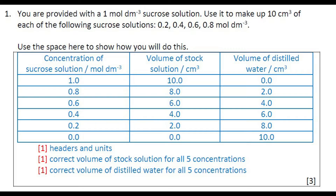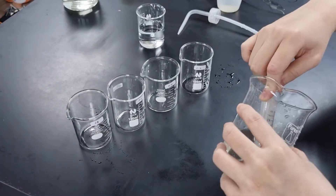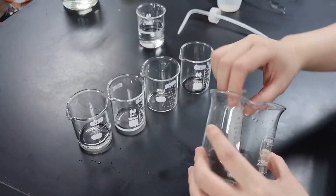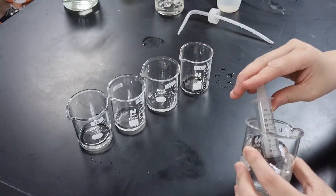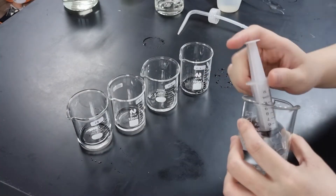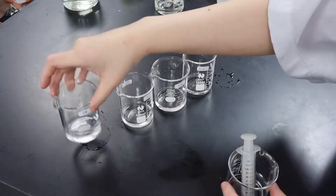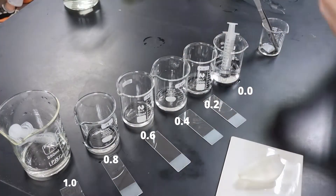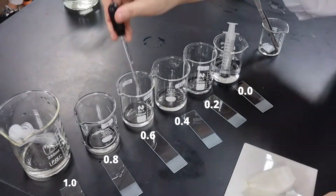There should be six concentrations in total, and this is me doing them in real life. I use the stock solution in this beaker and put different volumes into all the different labeled beakers: 8 cm³, 6 cm³, 4 cm³, 2 cm³, and then add water to fill each up to 10 cm³. I'm using a syringe to measure here, as the markings on the beakers are usually not accurate. So six concentrations, including 1 and 0, which is just distilled water.